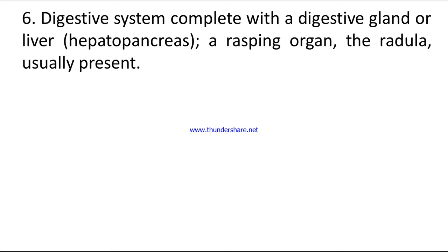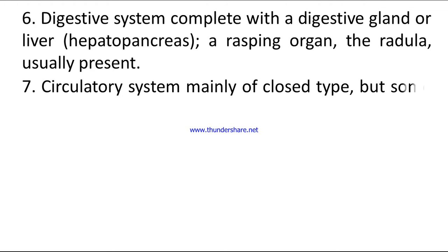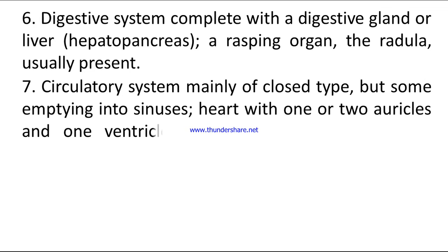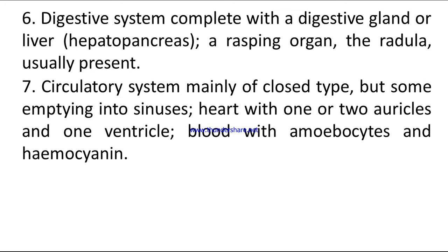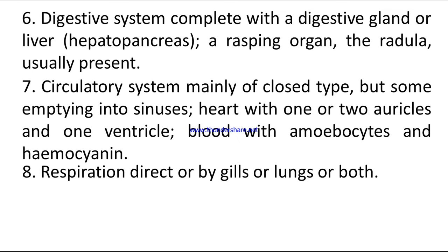Number six — digestive system complete, with a digestive gland or liver (hepatopancreas); rasping organ the radula usually present. Number seven — circulatory system mainly of closed type, but some emptying into sinuses; heart with one or two auricles and one ventricle; blood with amoebocytes and haemocyanin. Number eight — respiration direct, or by gills, or lungs, or both.